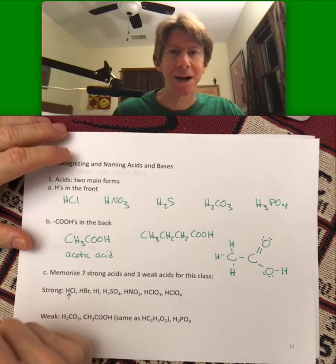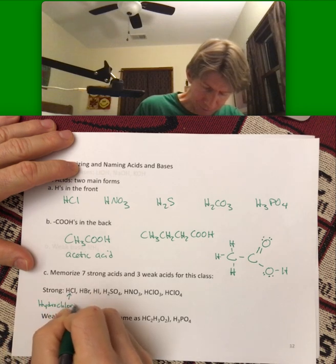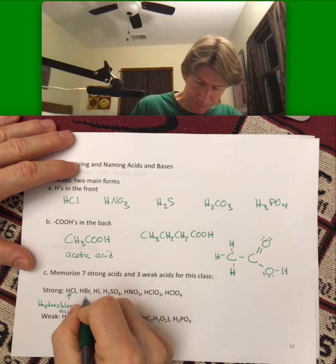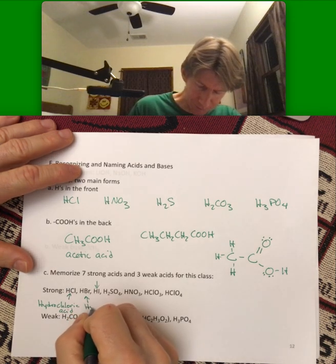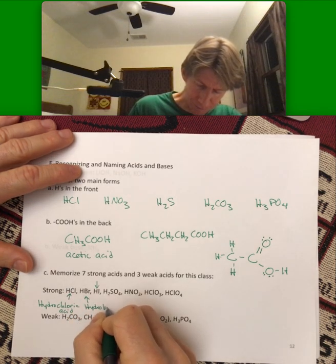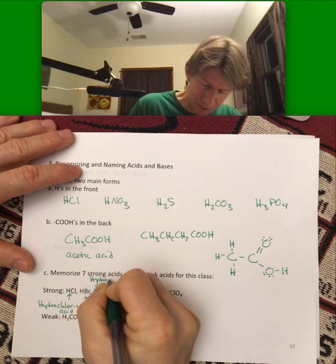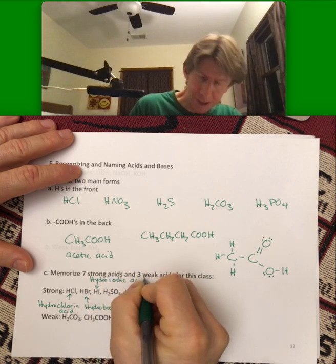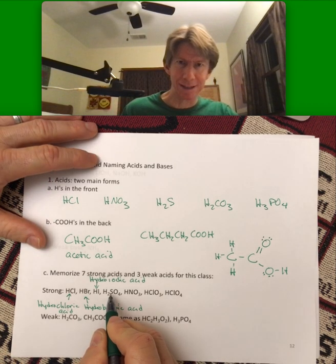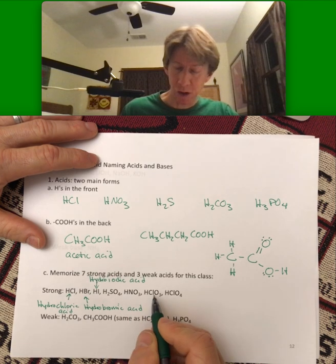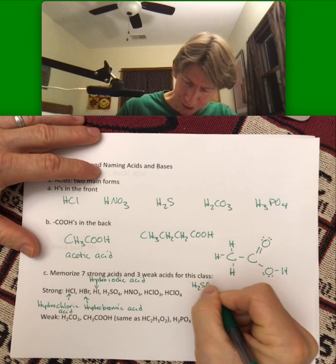So this is going to be hydrochloric acid, hydrobromic and hydroiodic acid. And they don't have to be capitalized. Hydrobromic and hydroiodic. Then we get to sulfuric acid, nitric acid, chloric, and perchloric acid.